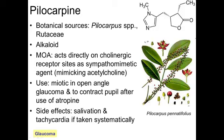Pilocarpine, which we've discussed before in prior lectures especially with regards to neuromuscular effects, belongs to the Pilocarpus species of the citrus family or Rutaceae family. This is an alkaloid as evidenced by its cyclic nitrogen in the structure. It acts directly on the cholinergic receptor sites as a sympathomimetic agent, basically mimicking the activity of acetylcholine. Because it is a sympathomimetic agent, pilocarpine will cause salivation and tachycardia amongst other effects if taken systemically. It is used for its meiotic or pupil-constricting properties in open-angle glaucoma, and to contract the pupil after the use of drugs like atropine or mydriatic agents. It is sold as a prescription-only medicine in many countries.